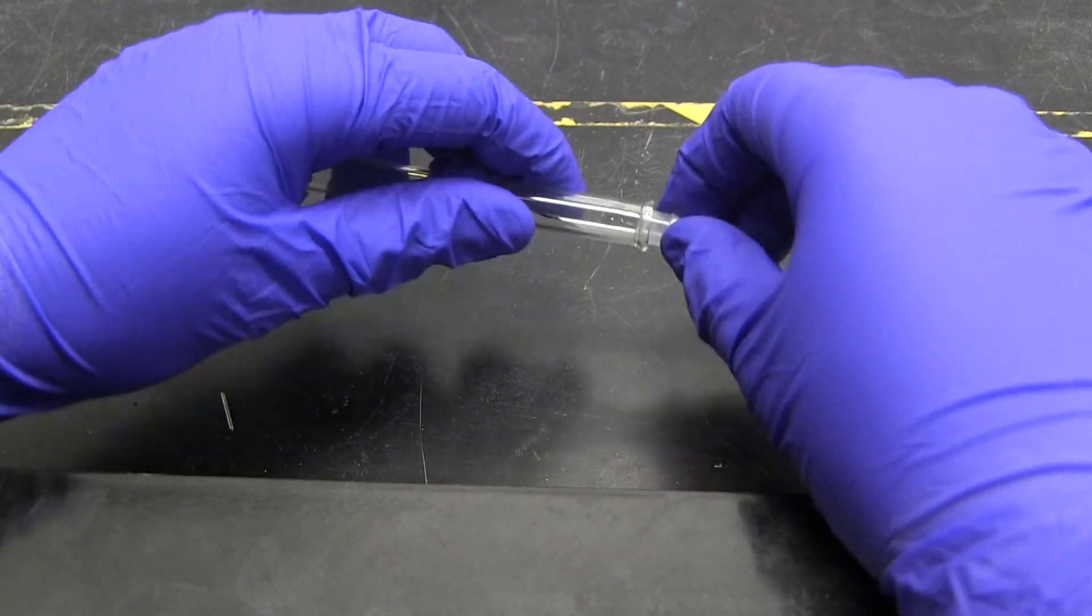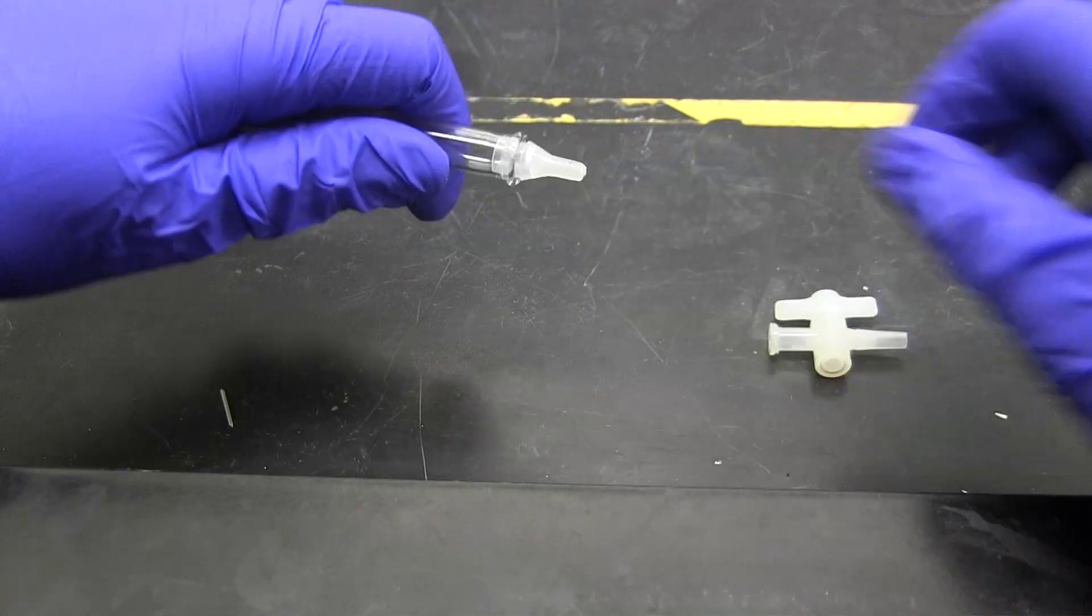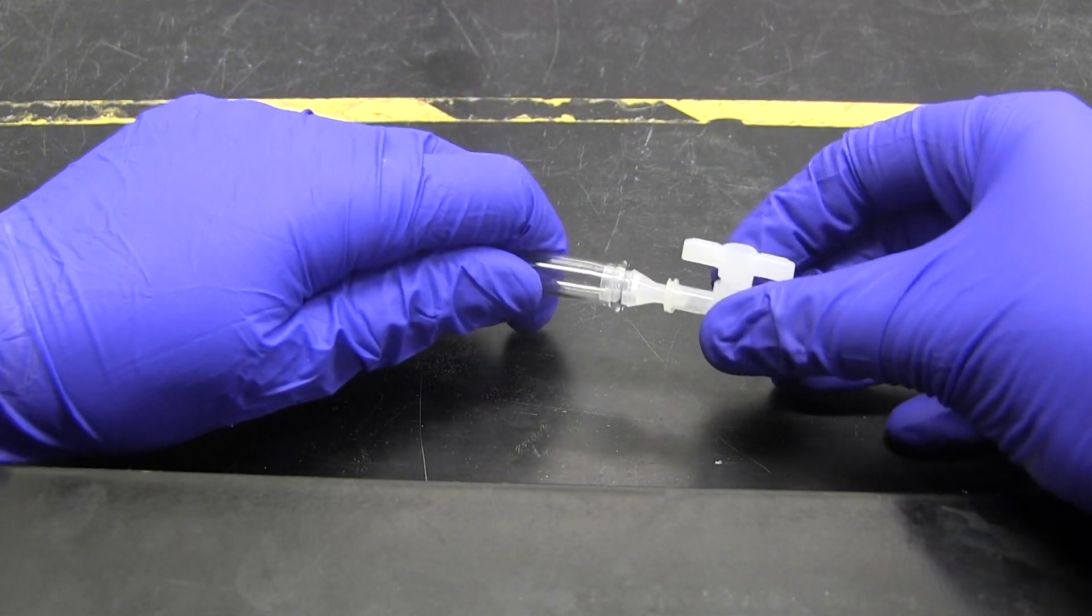Assemble the Microscales Chromatography Kit. Make sure the stopcock is in tightly, and also make sure that there is a frit in the plastic stopcock.